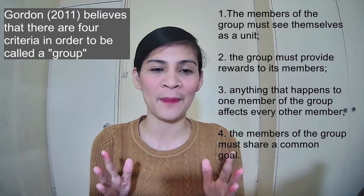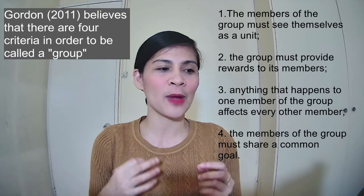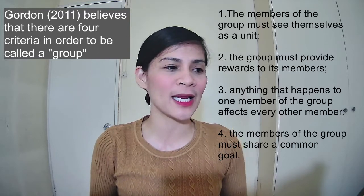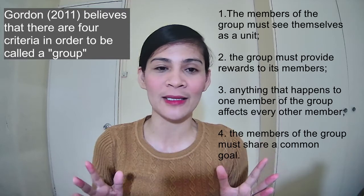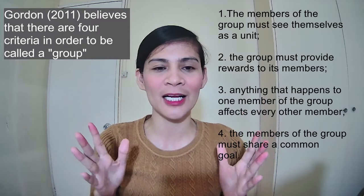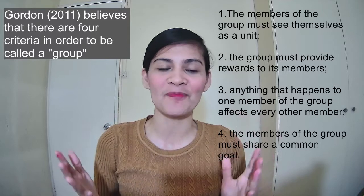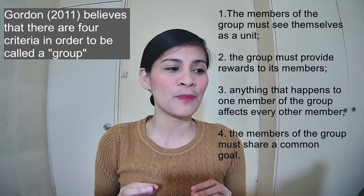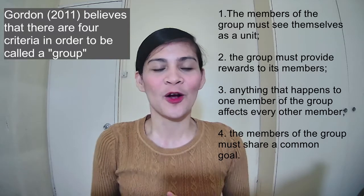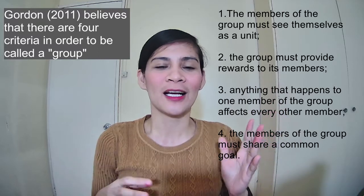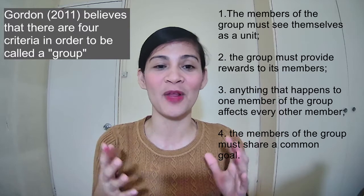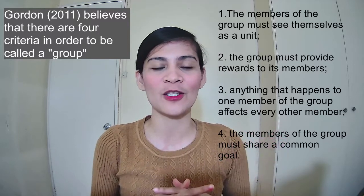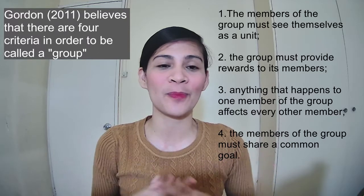Gordon, in 2011, believes that for a collection of people to be called a group, they must meet four criteria. The first one is that members must see themselves as a unit — they appeal to the same plan, the same meetings, meaning they are working as a unit and are not divided. The second criteria is that the group must provide rewards to its members, so that members feel they are loved and that they belong to the group.